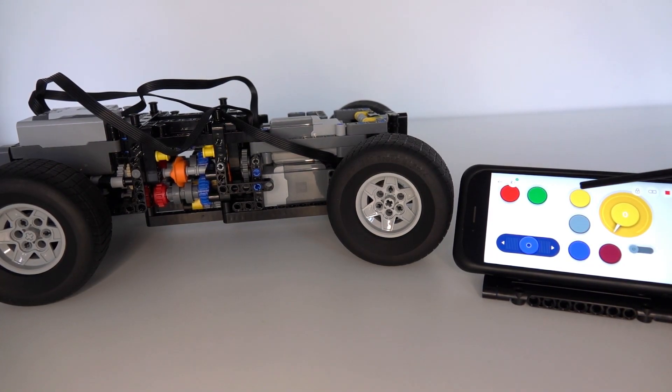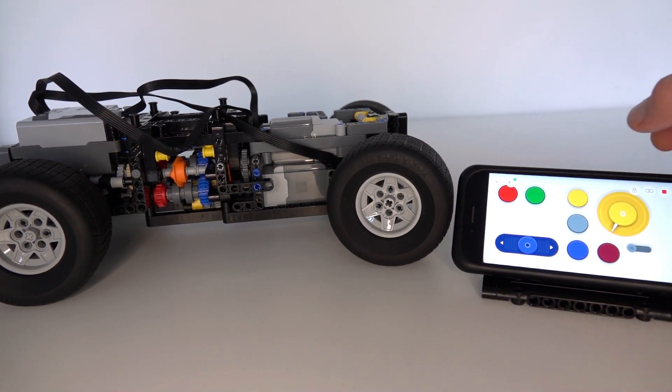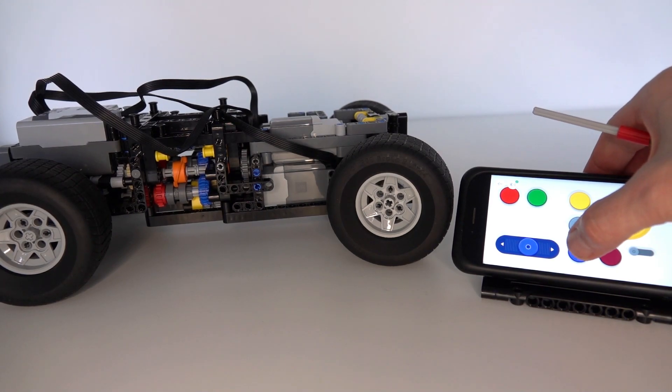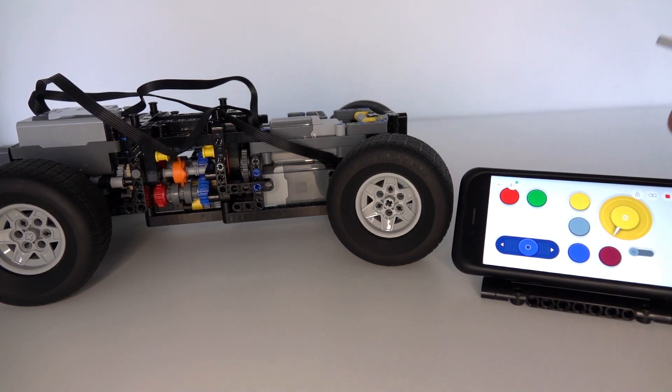These buttons here are the manual gear changing buttons, so I can go from gear one to two to three and to reverse just by pushing the button. For example, pushing button two will change to second gear, then three goes to third gear, and this is reverse, and back to one.